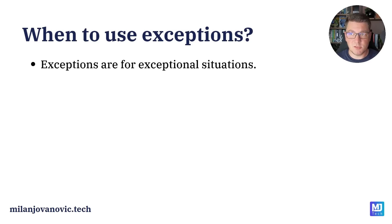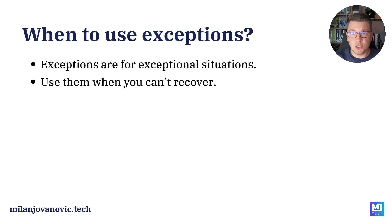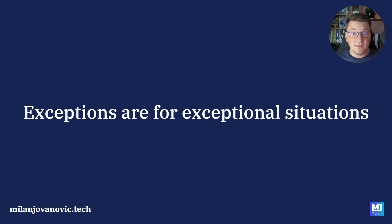The problem arises when people start using exceptions for flow control inside of your application, and I'm going to show you what that looks like in the practical part of this video. In general, you want to use exceptions when you encounter a state inside of your application that you don't know how to recover from. In that case, it is acceptable to throw an exception that should contain some information about why you couldn't proceed with normal execution. In this regard, exceptions help you implement the fail fast principle. The main takeaway is that you should use exceptions for exceptional situations.